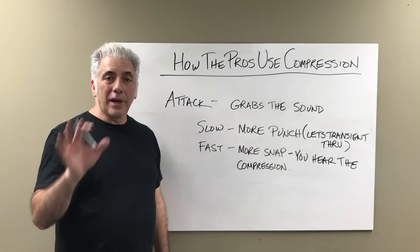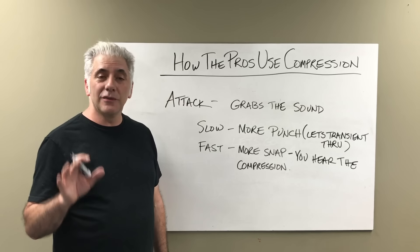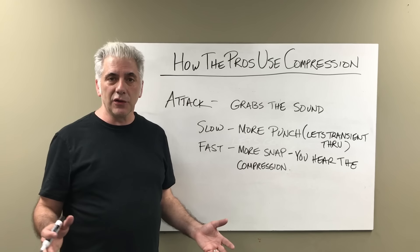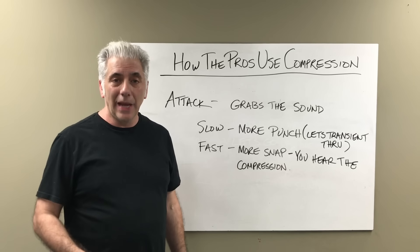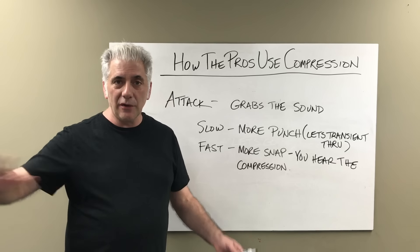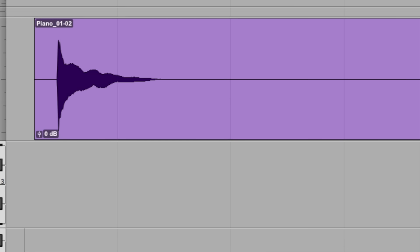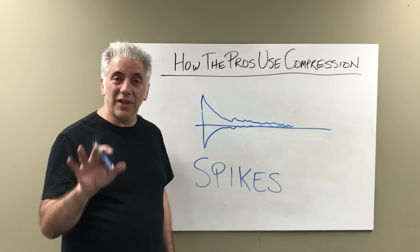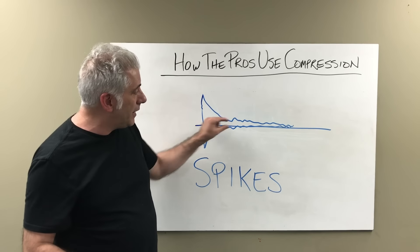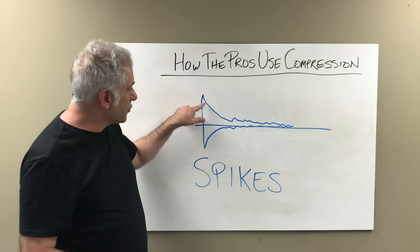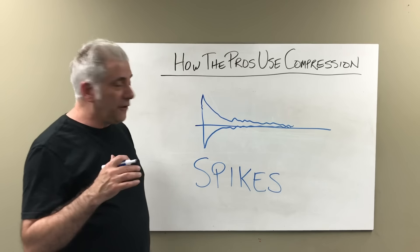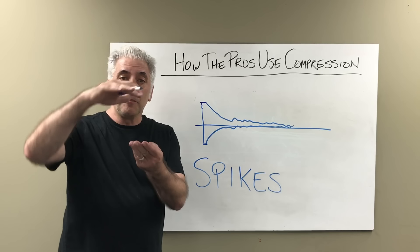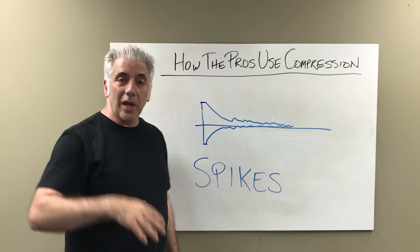Next we have attack and release times. The attack time is simply how fast your compressor grabs the sound. If you have a slow attack time, it lets more of the transient get through. The transient is the initial strike — a snare drum has a very quick transient and then the sound decays fast. Same with piano or acoustic guitar. The piano and snare drum waves look almost identical: a huge transient that tapers afterwards. This transient is what you want to control — heavy compression will literally flat-top it and compress the bandwidth.